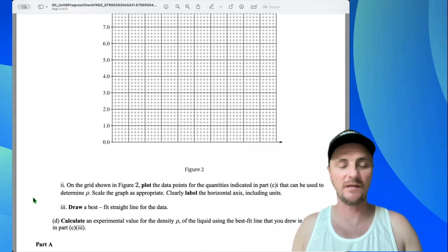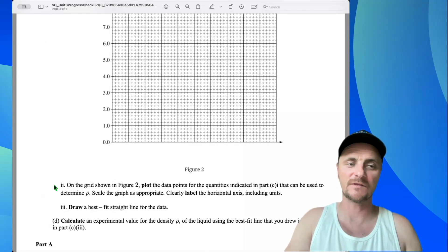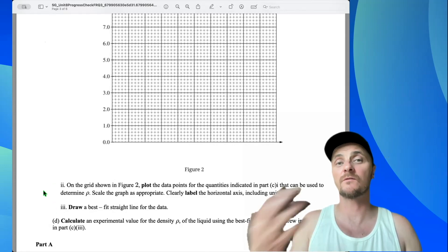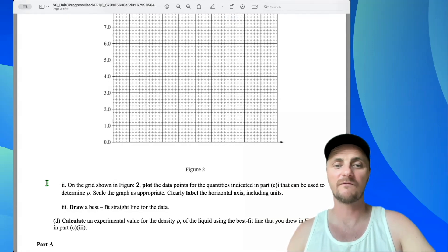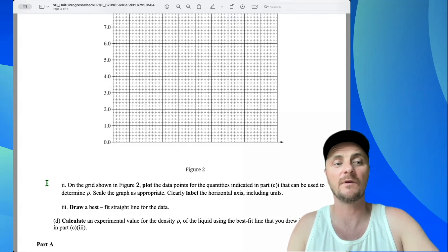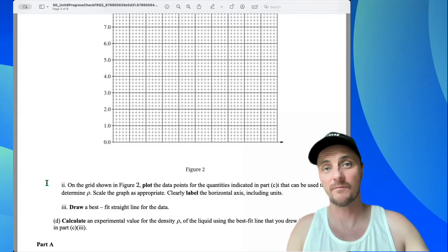Let's do Part D. In Part D, calculate an experimental value for the density rho of the liquid using the best fit line that you drew in Figure 2 in Part C3. Let's go to the paper.